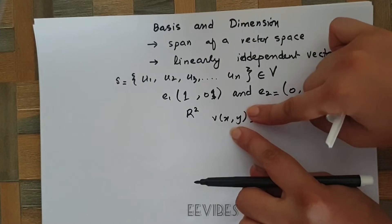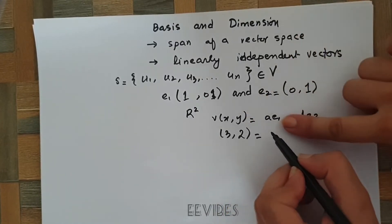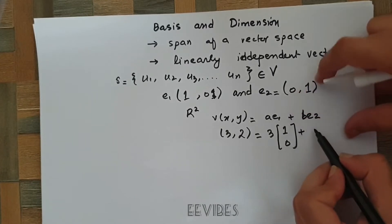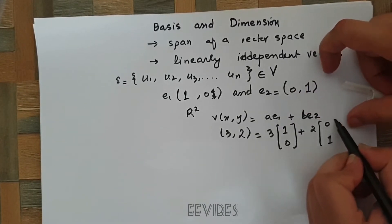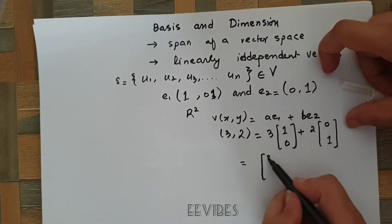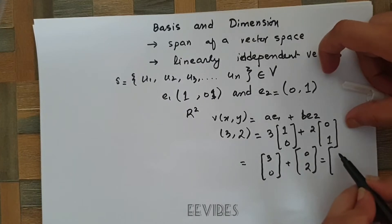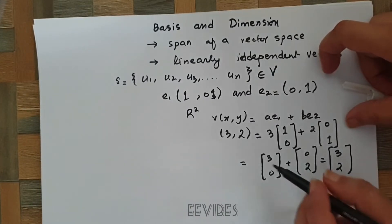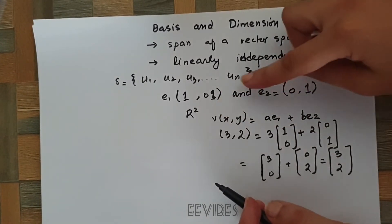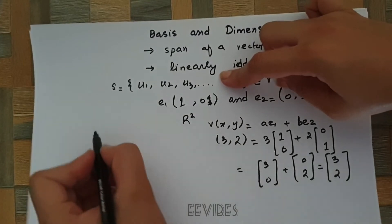For example, if x = 3 and y = 2, then we get 3·(1,0) + 2·(0,1). Simplifying: (3·1, 3·0) + (0, 2) = (3, 0) + (0, 2), giving us the desired vector (3, 2). In this way, you can generate any vector having two components using e1 and e2. That's why e1 and e2 are called the standard basis of R².